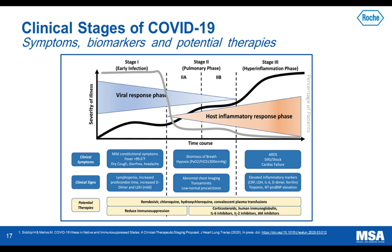In stage three, clinical symptoms can consist of ARDS, sepsis, and cardiac failure. There are elevated biomarkers during this time point such as CRP, LDH, or even IL-6, which has recently received EUA for this designation. There are current potential therapies, but for the purposes of today's talk, we are only going to be discussing diagnostic modalities. The majority of patients typically only fall into this early stage one.